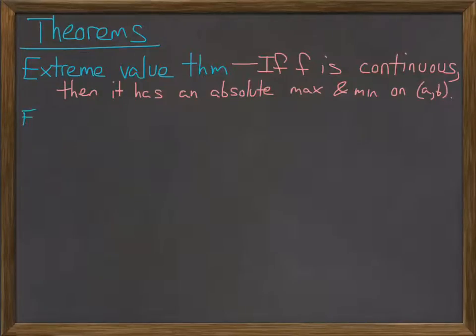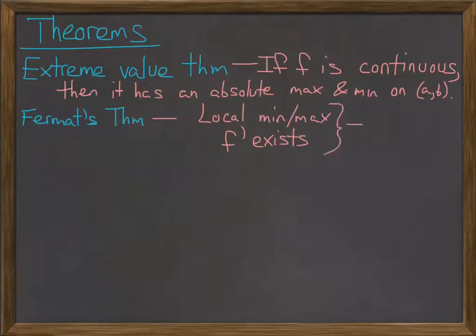Fermat's theorem was the next one. And Fermat's theorem says if you have a local extremum and the derivative exists, then the derivative is equal to zero. It's very important to remember that this doesn't work backwards. So just because derivative is equal to zero doesn't mean this is a local min or max.